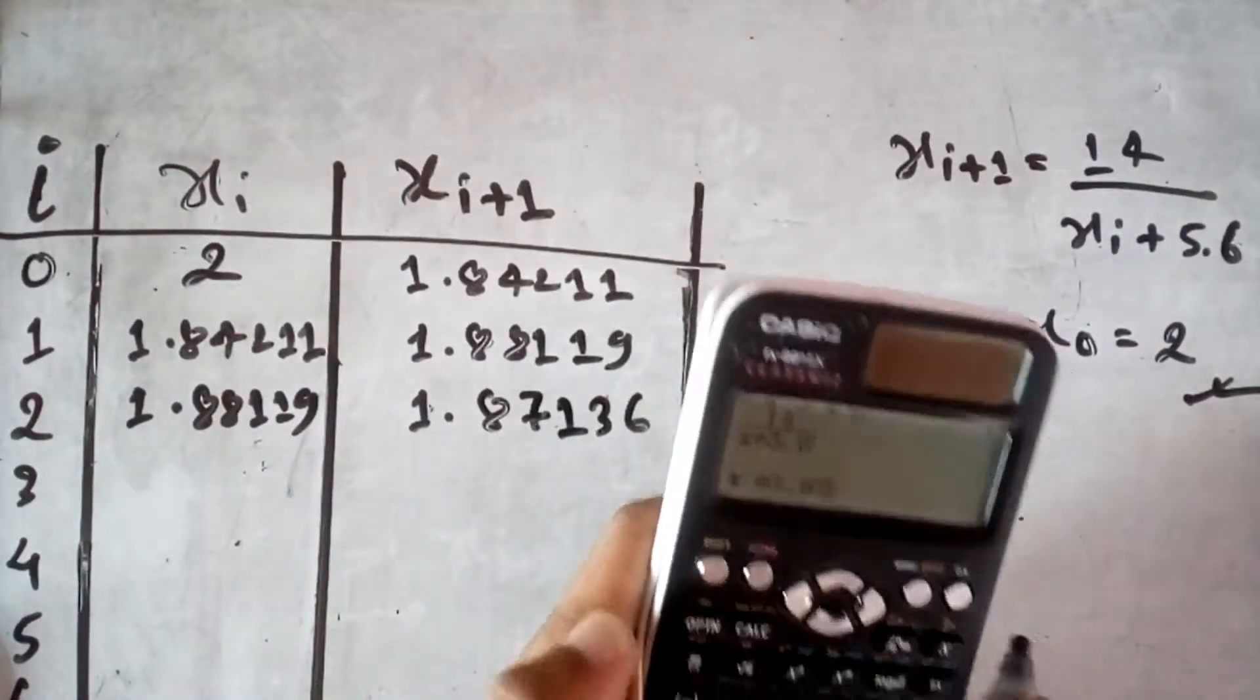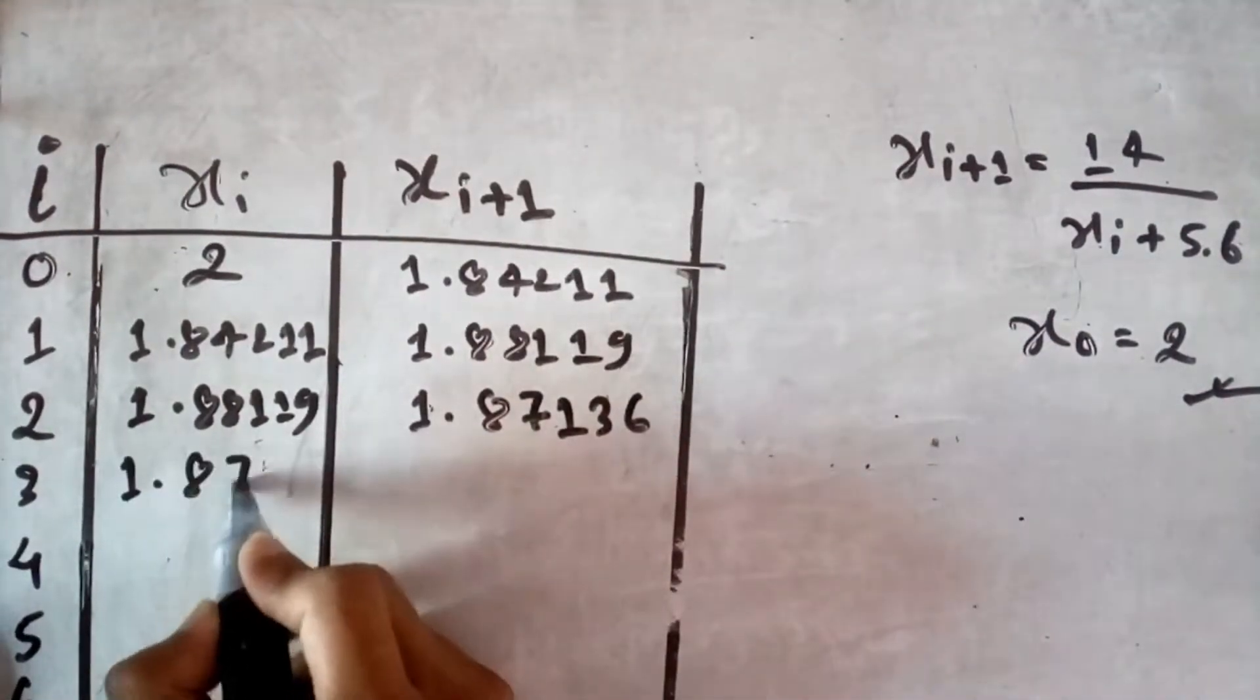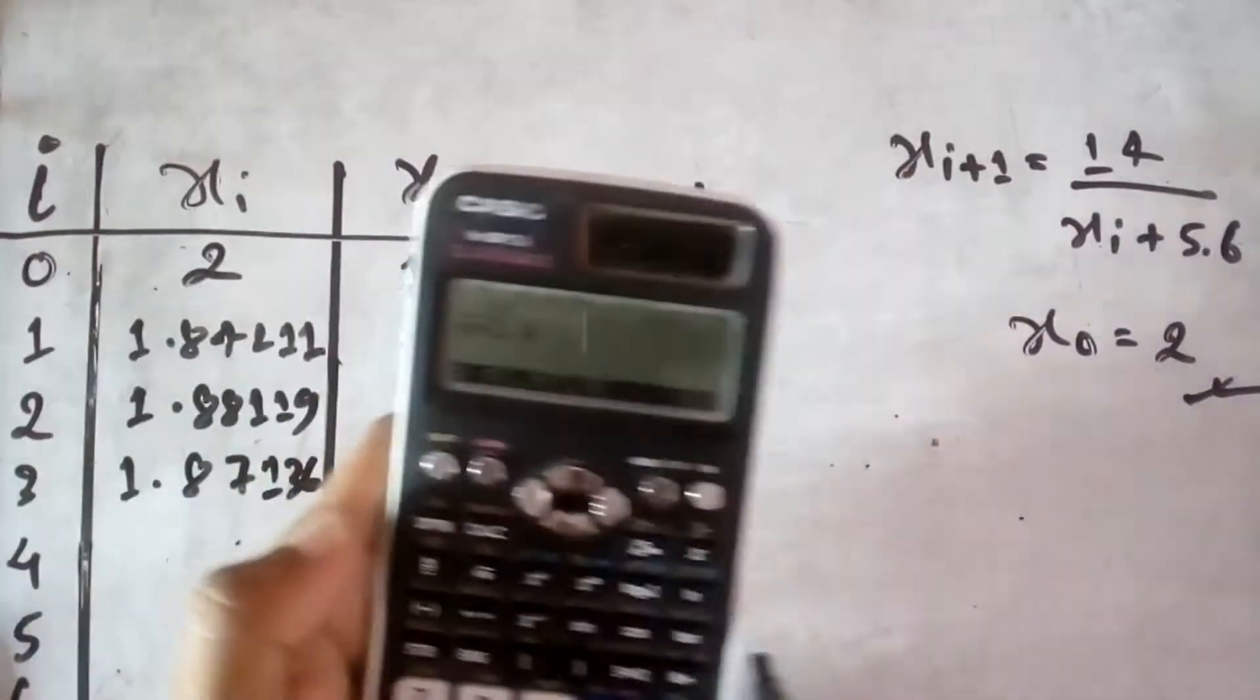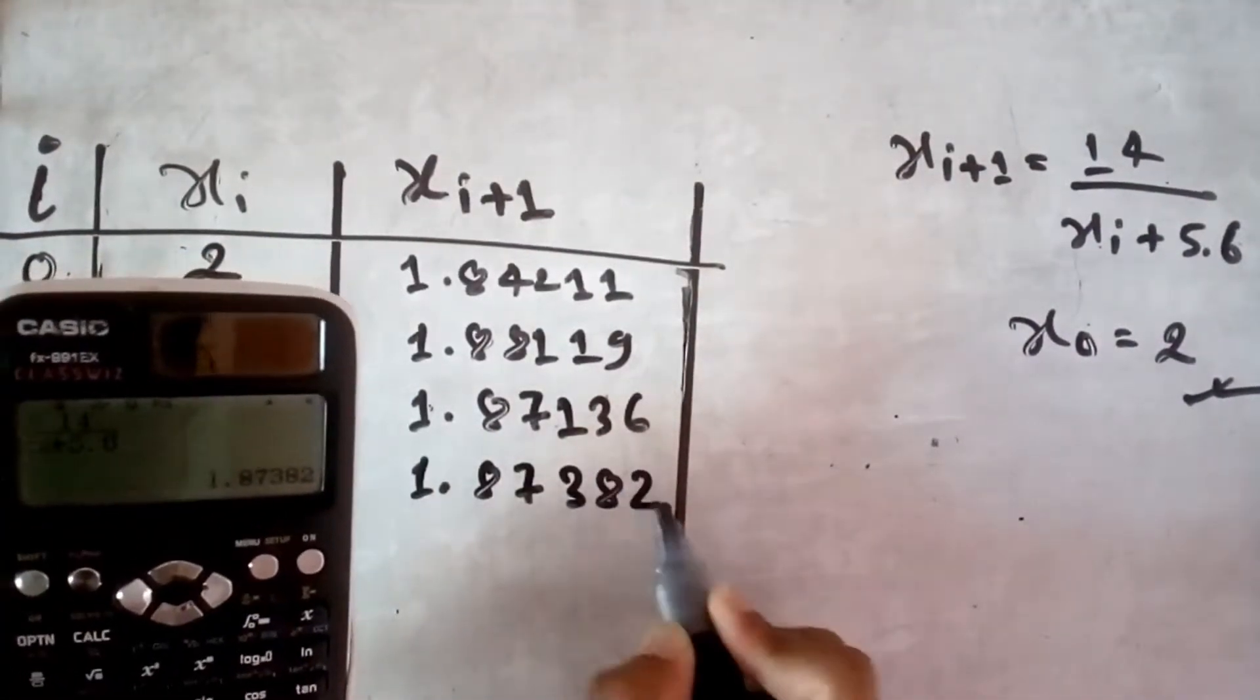Now 1.87136, put it here 1.87136, we get 1.87382.